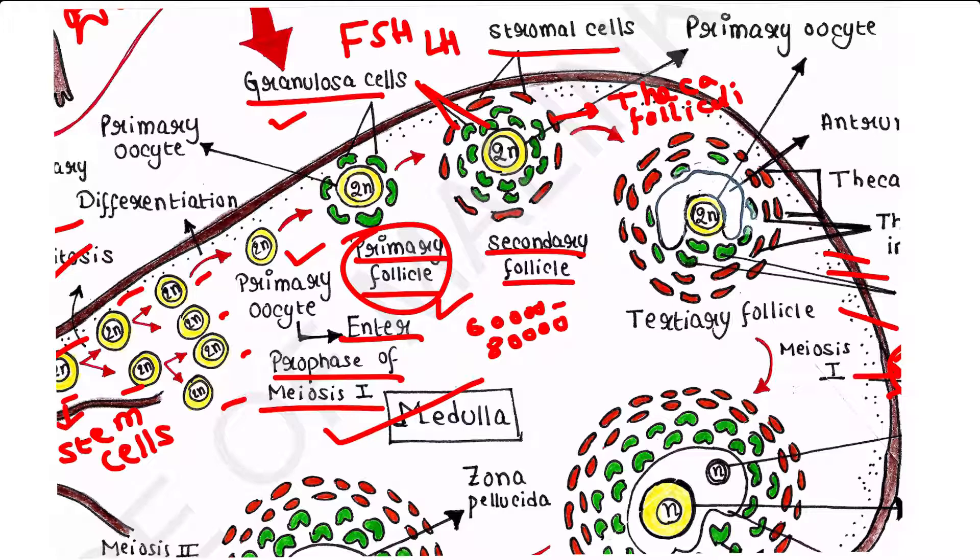Now when FSH and LH act on that primary follicle, multiple layers of granulosa cells will surround it and form the theca follicle. The entire structure is now called secondary follicle.